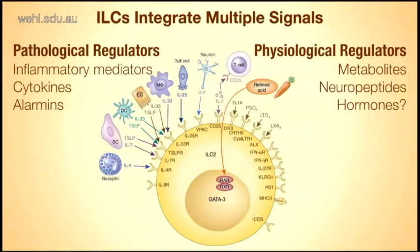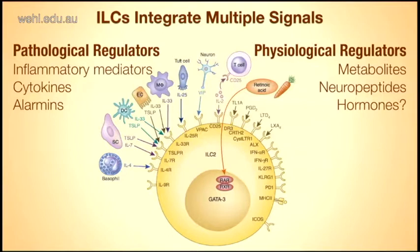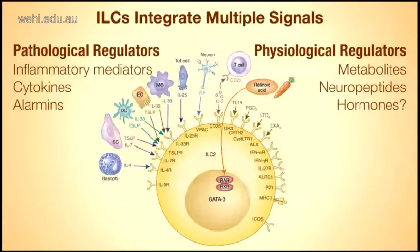ILCs need to integrate a lot of signals to mediate their role. I distinguish the pathological regulators from the physiological regulators. They can sense inflammatory mediators, cytokines and alarmins, but these cells are also equipped with receptors that can identify metabolites, neuropeptides, and — the story I will present today — also hormones.